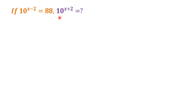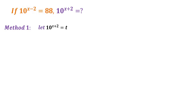We are going to use two methods to solve this problem. Method 1: since we already have 10 to the power of x minus 2 is equal to 88, we let 10 to the power of x plus 2 equal t. This is equation 1. And we already have 10 to the power of x minus 2 is equal to 88 — this is equation 2.